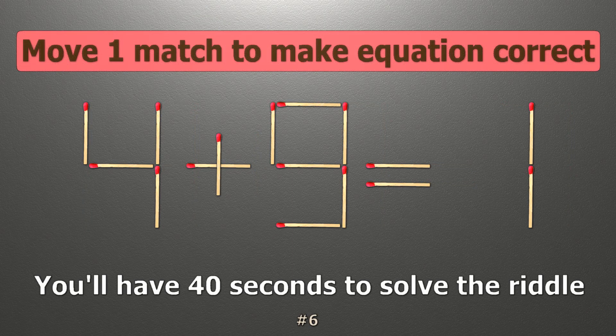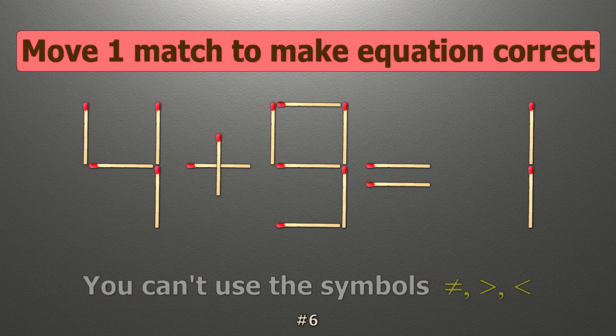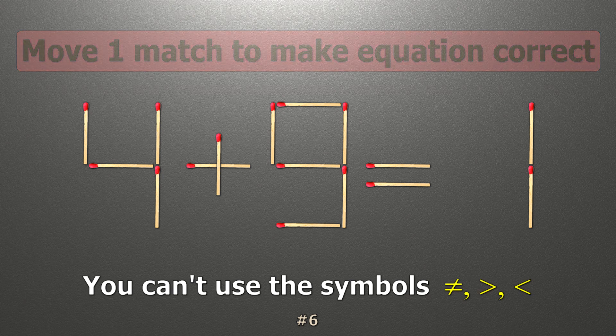We have the equality 4 plus 9 equals 1. Our equality is wrong. We need to move one match to make our equality correct.